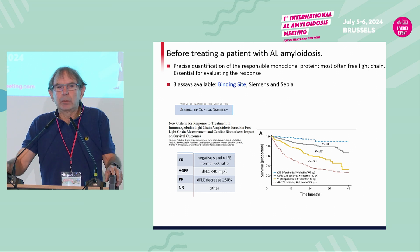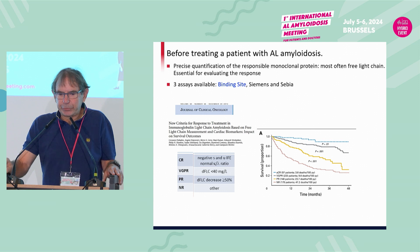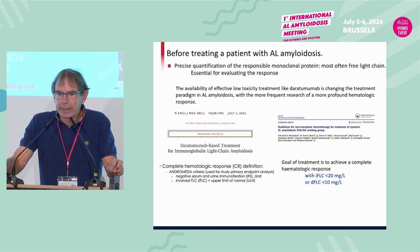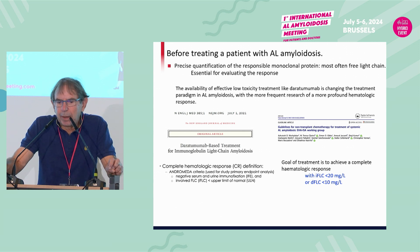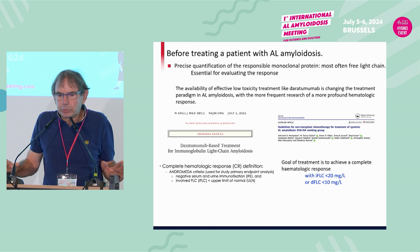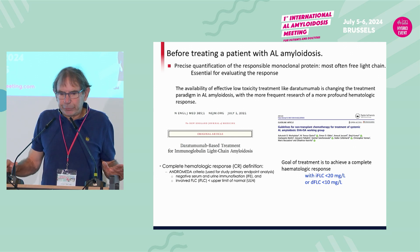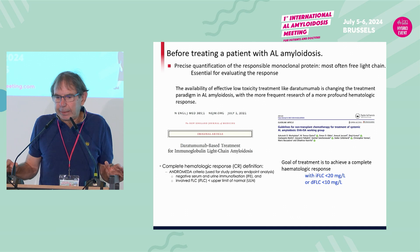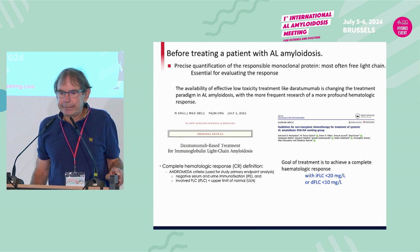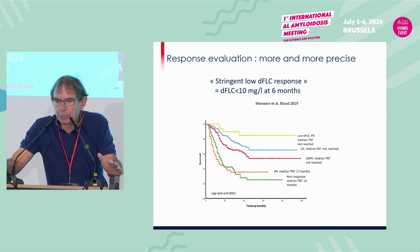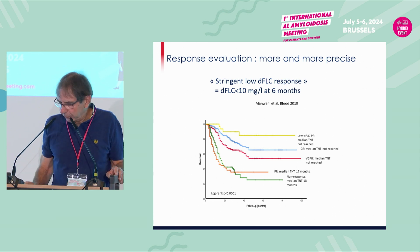In the classical criteria, CR was negative serum and urine immunofixation and a normal kappa and lambda ratio. But in the Common Working Group guidelines, there is this very important sentence: the availability of effective, low-toxic treatment like daratumumab is changing the treatment paradigm in AL amyloidosis with more frequent achievement of more profound hematologic response. The CR in the big Andromeda study was not a normal FLC ratio, but a normal involved free light chain — IFLC below 20 or DFLC below 10. DFLC below 10 is a really nice way to determine response, and in a study from the London group, it was better than the classical CR.